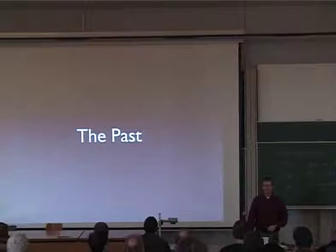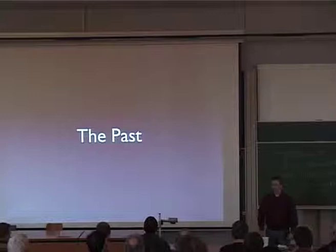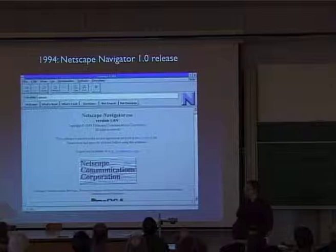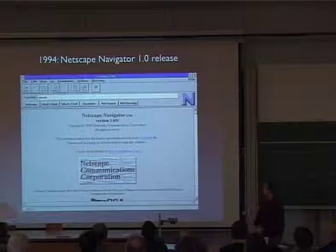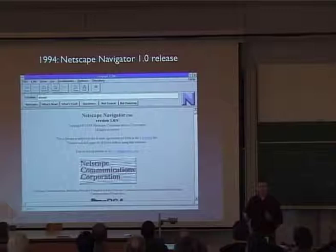Before we talk about the future, we should talk a little bit about the past. It started around 1994. People remember Netscape 1.0 and the Mosaic browser. What's surprising about this is much of the Chrome, much of the buttons around the outside content window are different icons but the same buttons as they are today.